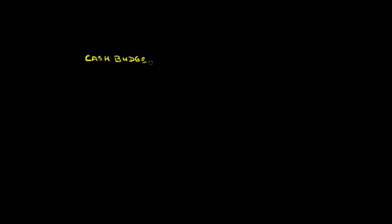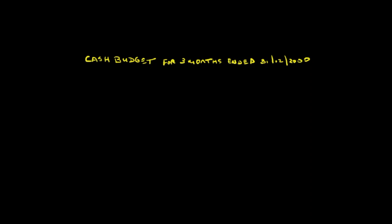So cash budget — that's the document we're producing, the first part of our business plan. We'll always put in the period that it relates to. It's three months ended 31st of December 2000. And we need to make a name. We'll call our company XYZ Limited. So we've got a heading with a line underneath — XYZ, cash budget.